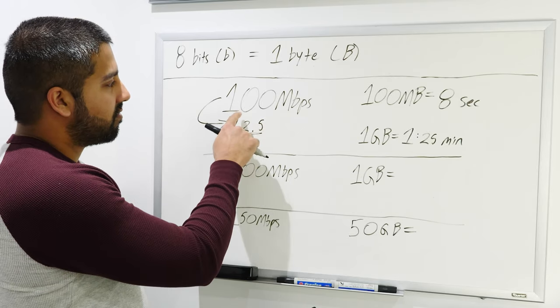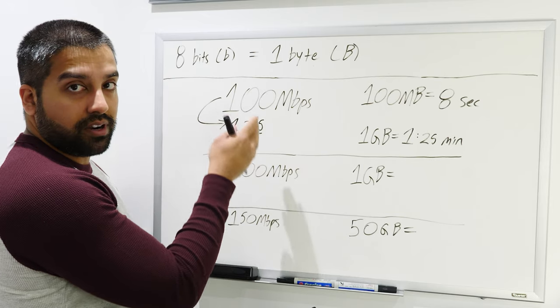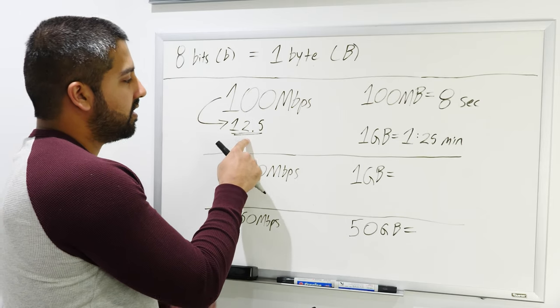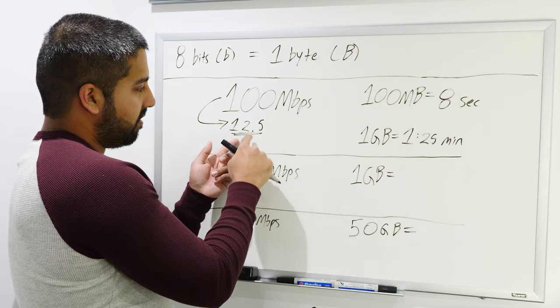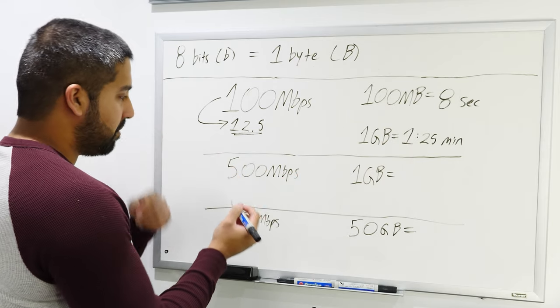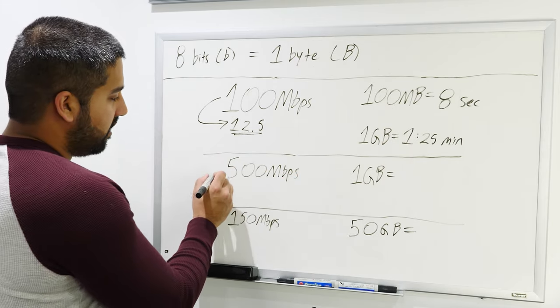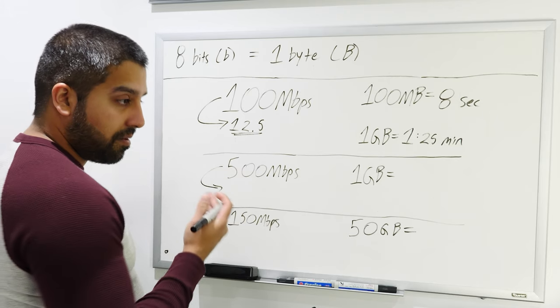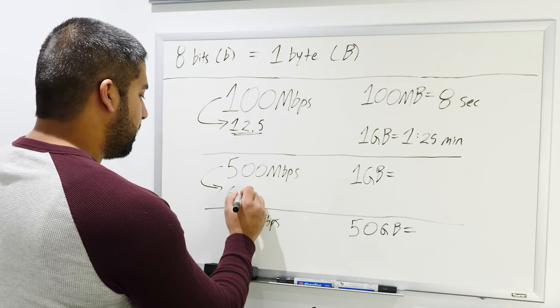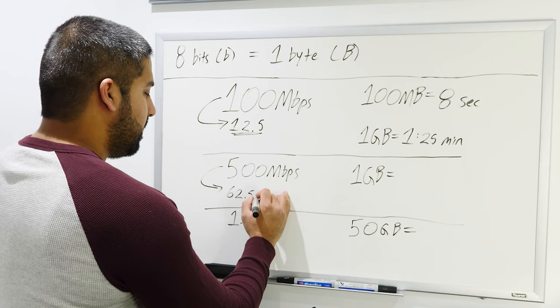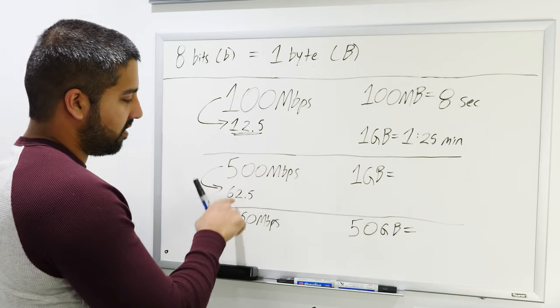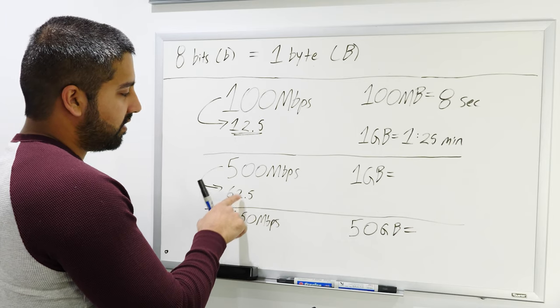So the rest is pretty self-explanatory, but we'll continue on with a few more real-life examples. But now you get it. Just take your internet download speed or upload speed, whatever, divide by eight, then take your file size and divide it by this number here. Right, so let's take another example. 500 megabits per second would equal, if divided by eight, 62.5. Right, that's how many megabytes per second you would download at.